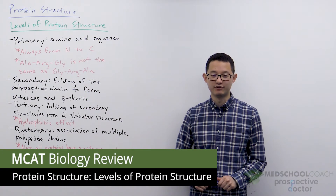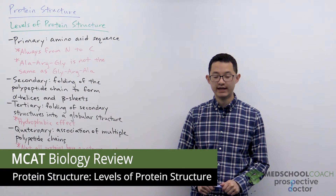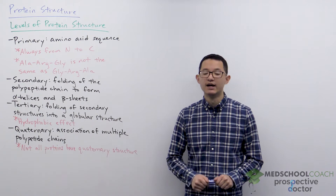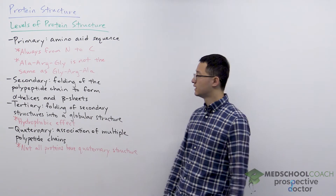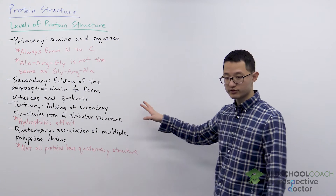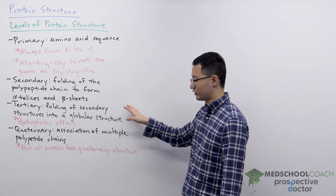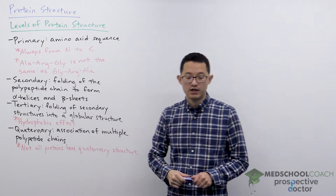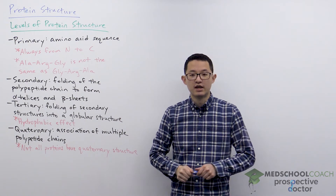In the next few videos we're going to go over protein structure. In this video we're going to talk about the different levels of protein structure. There are four levels of protein structure: primary, secondary, tertiary, and quaternary. We'll start first with primary protein structure.